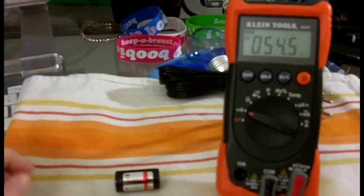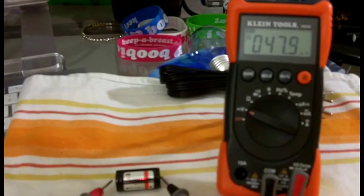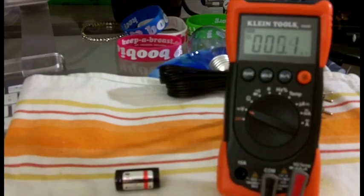Here's an RCR 123A. Same thing. Black to the negative. Red to the positive. 4.2. Also a freshly charged battery.